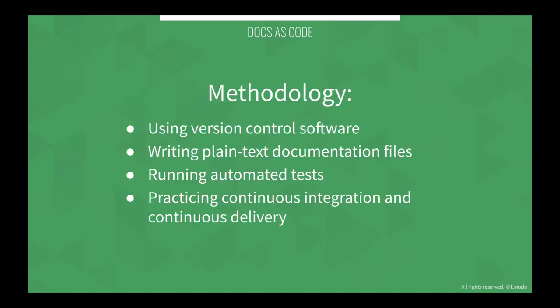The methodology is composed of using version control software — Git, for example — writing in plain text doc files as opposed to Word docs or Confluence. Running automated tests, a primary use case being checking for spelling and grammar automatically whenever somebody tries to merge new documentation. And then practicing continuous integration and continuous delivery — frequently merging your work and frequently publishing it in a way that isn't prone to failure or unexpected surprises.